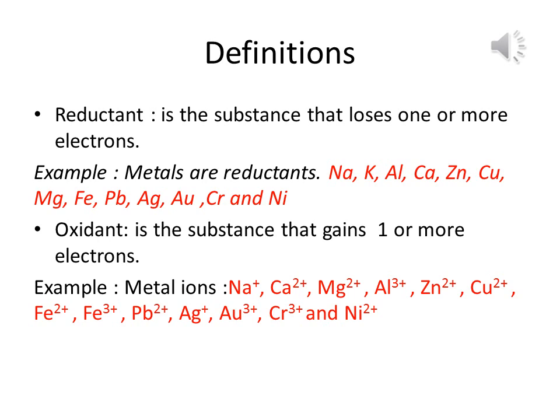A reductant is the substance that loses one or more electrons. Metals are reductants. Examples of metals are sodium (Na), potassium (K), aluminum (Al), calcium (Ca), zinc (Zn), copper (Cu), magnesium (Mg), iron (Fe), lead (Pb), silver (Ag), gold (Au), chromium (Cr), and nickel (Ni).